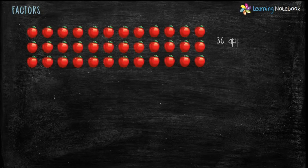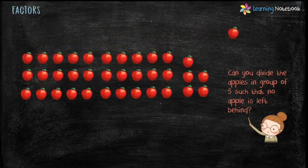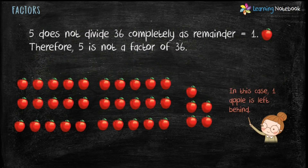Now can we divide these apples in a group of 5 such that no apple is left behind? Let's make groups of 5 apples, and we find that there is 1 apple left behind. This means 5 does not divide 36 completely as remainder is 1, therefore 5 is not a factor of 36.